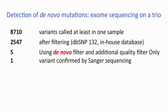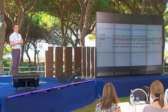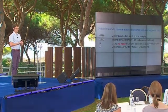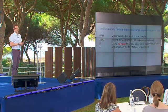We set off with such an approach using the SOLID4 platform with a whole exome enrichment. We got around 9,000 variants called in at least a single sample. After filtering, we could reduce this to approximately one third. We then applied the de novo filter, looking at variants only present in the child, and were left with five candidate variants. We tried to confirm those by Sanger sequencing and could confirm only a single one — and this single one turned out to be the mutation.